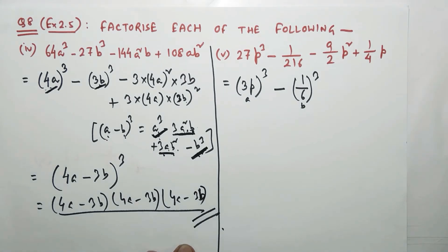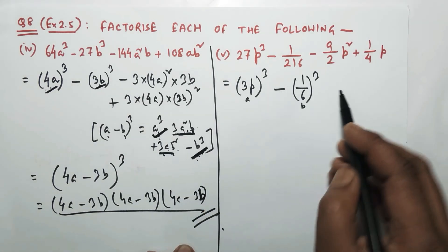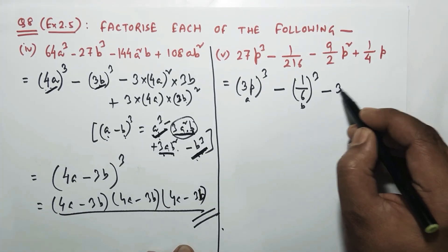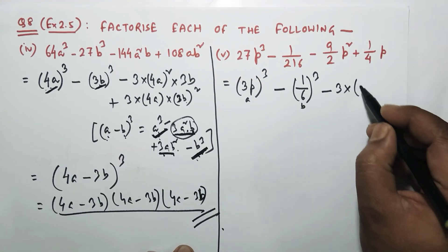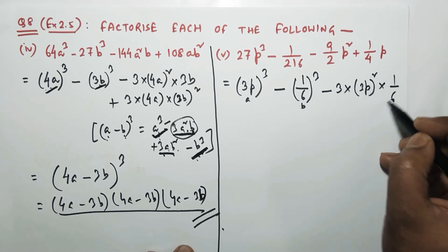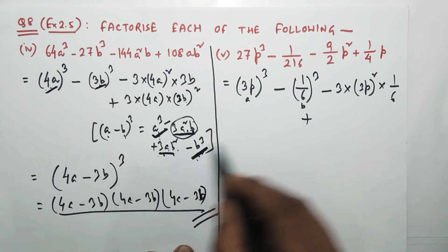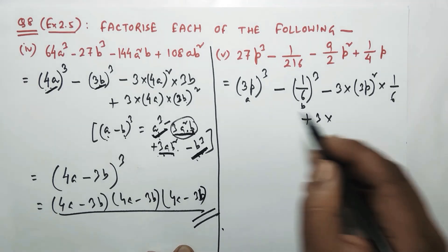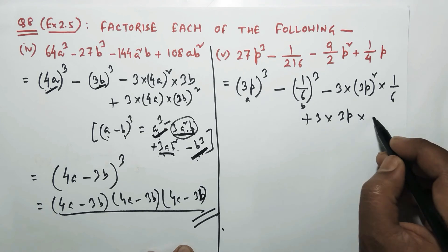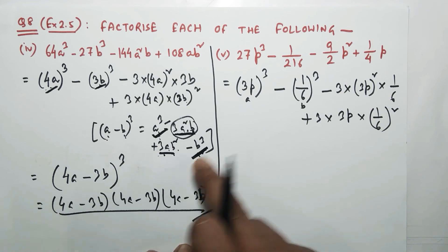In the formula a³ - 3a²b + 3ab² - b³, these two whole cubes give us: (3p)³ is a³, so a = 3p in the formula. And (1/6)³ is b³, so b = 1/6. Now I'll write the middle terms: minus 3a²b means minus 3×(3p)²×(1/6), plus 3ab² means plus 3×(3p)×(1/6)².